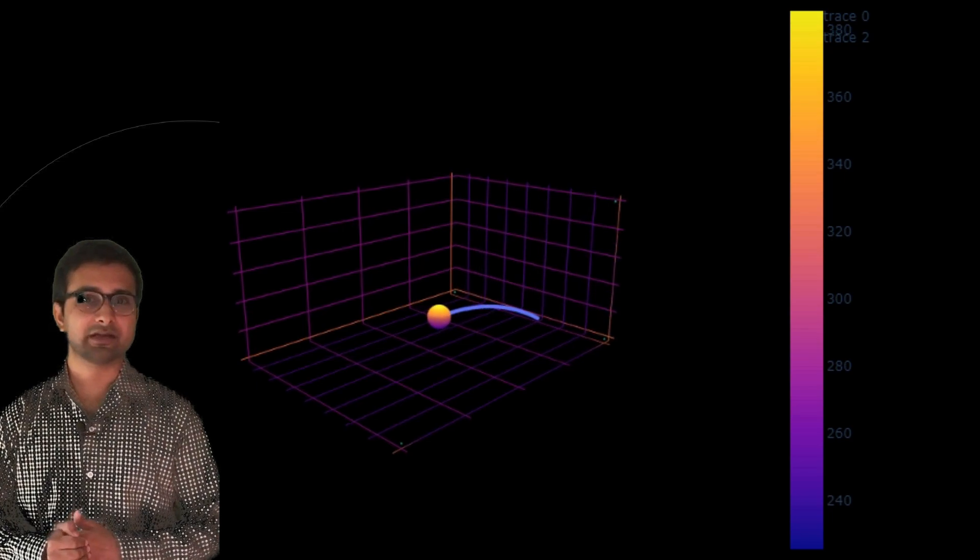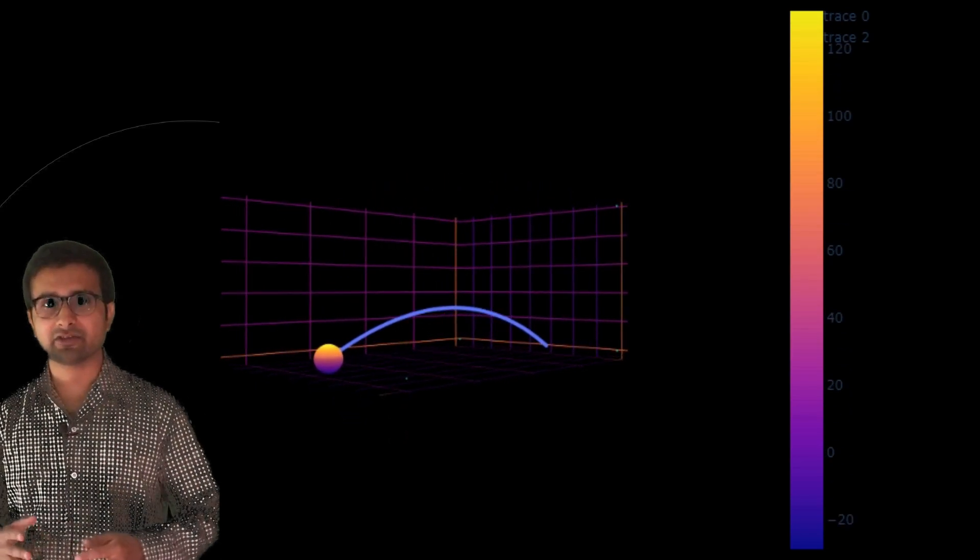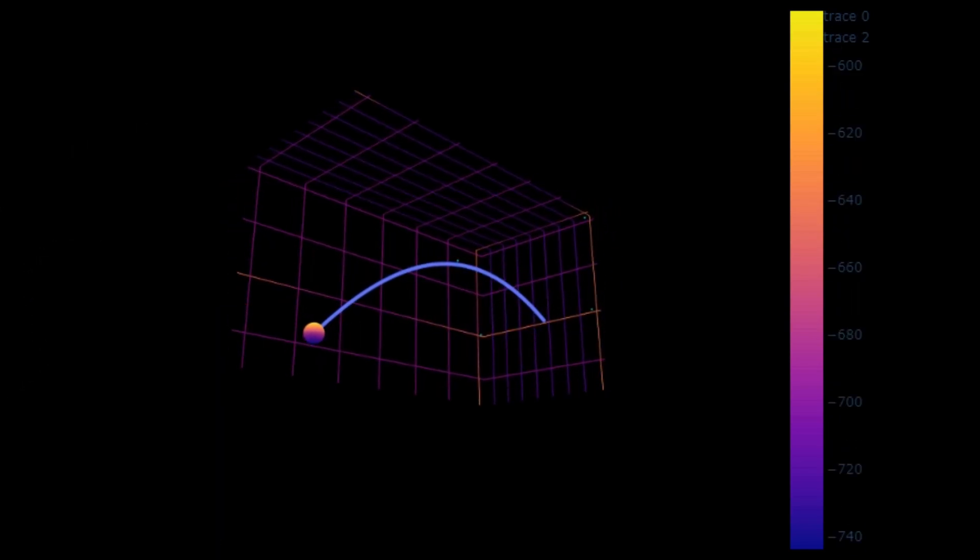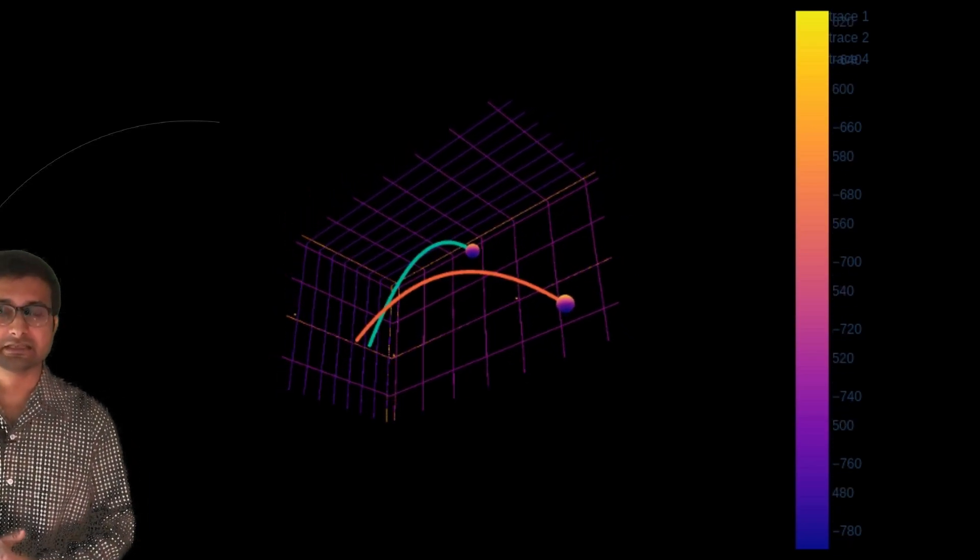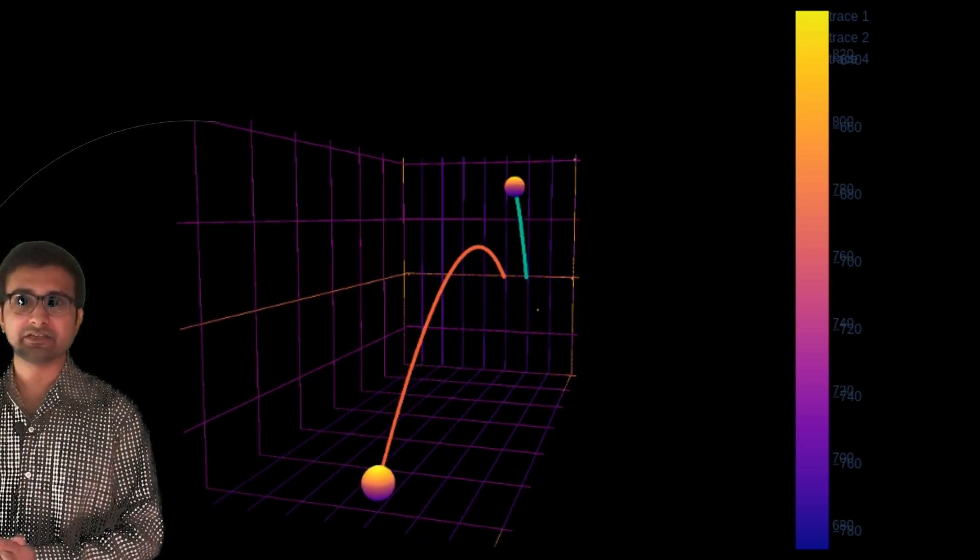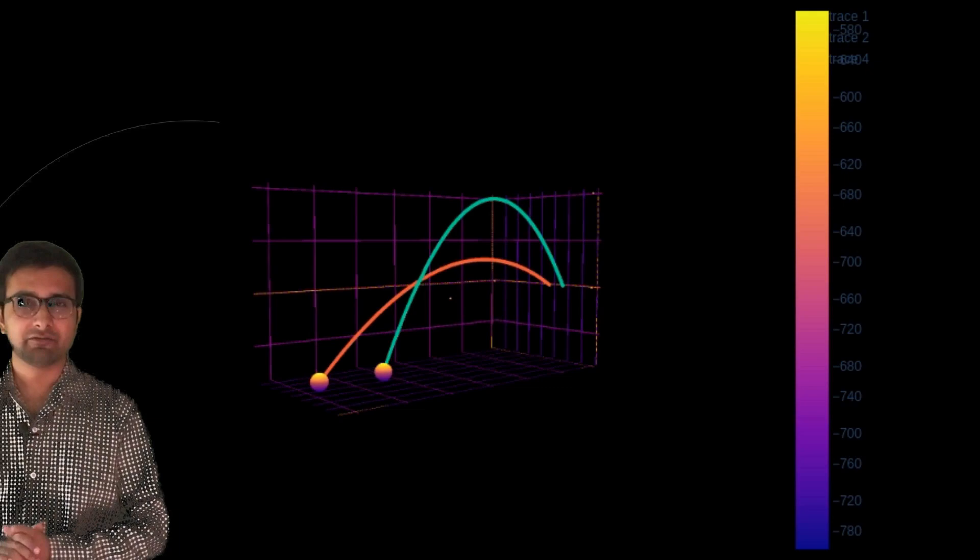So our first ball we are throwing up with a 15 meter per second initial velocity and 30 degrees as an angle of throw. Now with the second throw, we are going to increase the angle of throw to 60 degrees while keeping the initial velocity 15 meters per second.